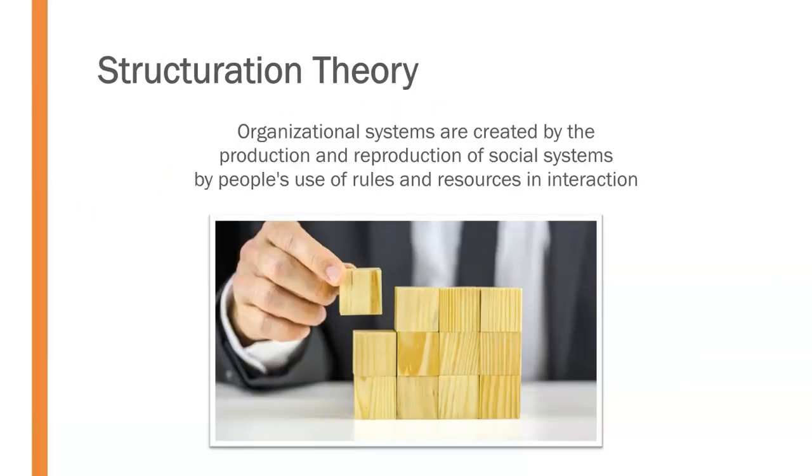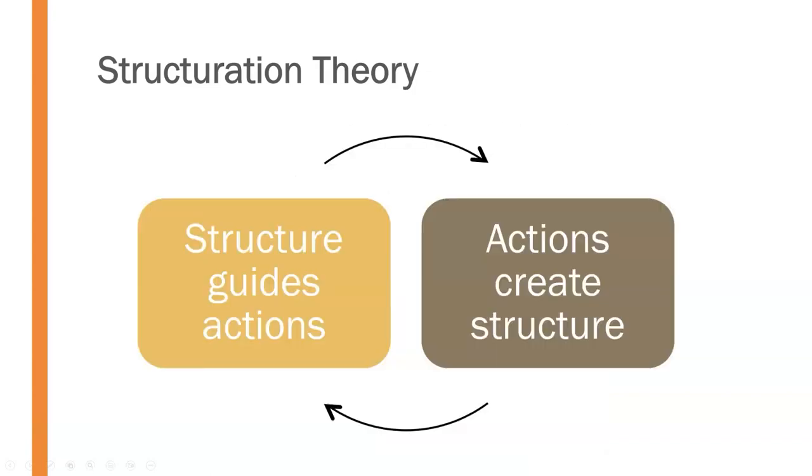Another key contemporary theory in organizational communication is structuration theory, which holds that organizational systems are created by the production and reproduction of social systems by people's use of rules and resources in interaction. Structuration theory stems from the principle of interdependence identified in systems theory. It suggests that structure and agency are not separate concepts in an organization, but rather a duality. In other words, people's actions produce structure, but by acting within a structure, they also perpetuate or reproduce it, in effect, further creating and contributing to that structure.